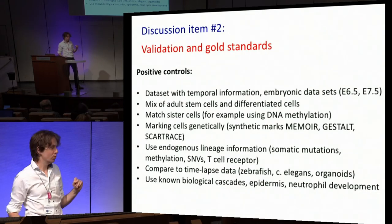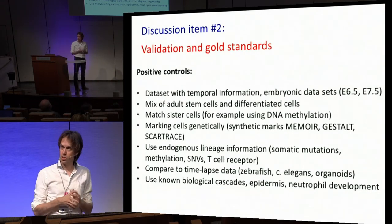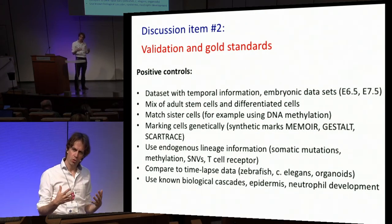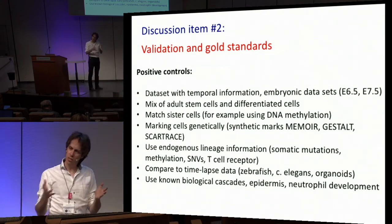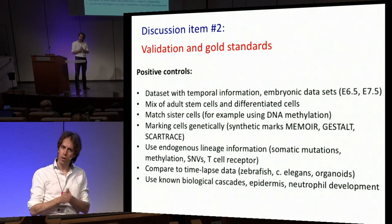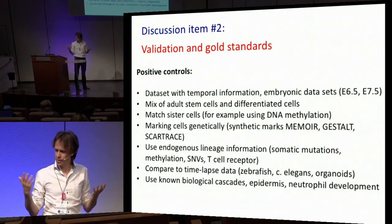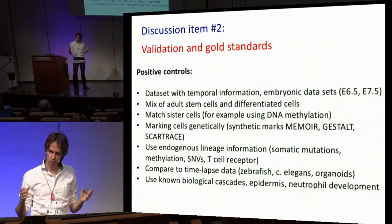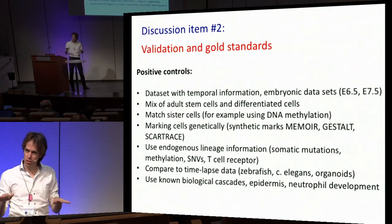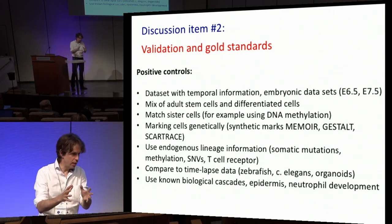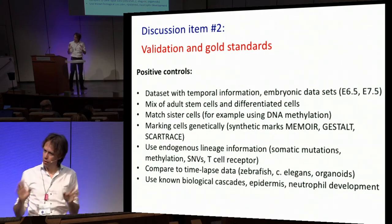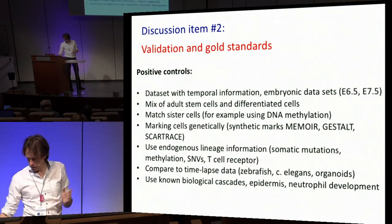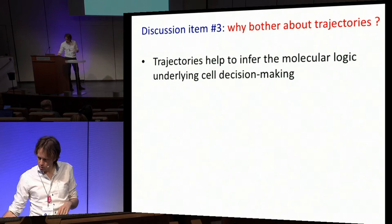I forgot the slide on the negative control, which is probably the hardest to think about. What does it mean to have a negative control? There should be a system of cells that you put in and you don't want any trajectories to come up. We were thinking about perhaps a homogeneous pool of adult stem cells or fully differentiated cells that don't divide anymore. They should just be one state — no highways, no transitions. The algorithm should tell you there are no trajectories it can find.